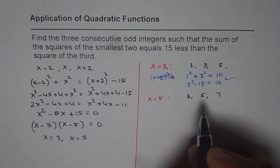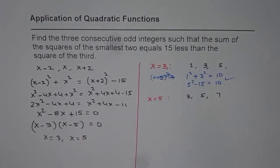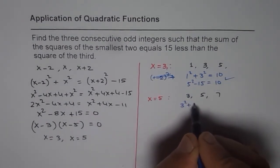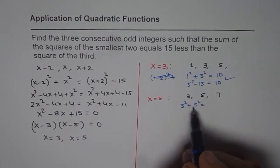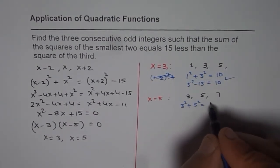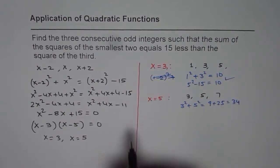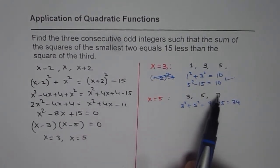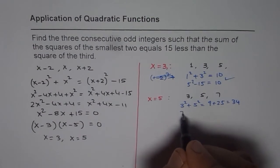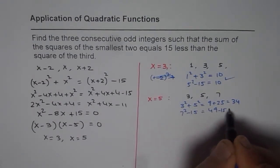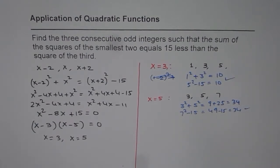Sum of squares of 3 and 5 is how much? 3² + 5² is 9 + 25, which is 34. And the square of 7 minus 15? 7² - 15 is 49 - 15, which is also 34. So that also works.